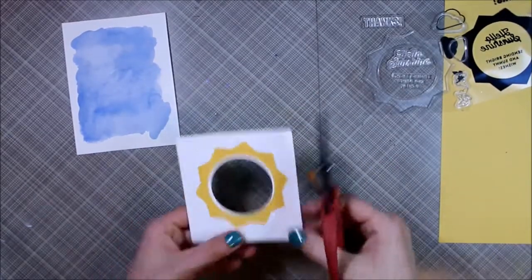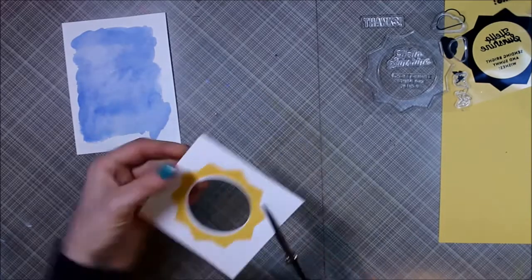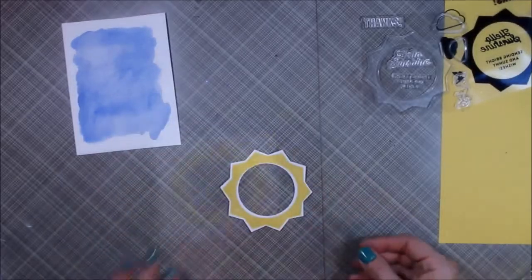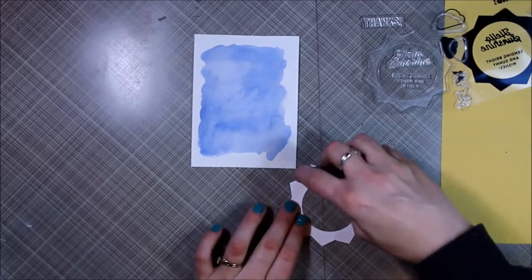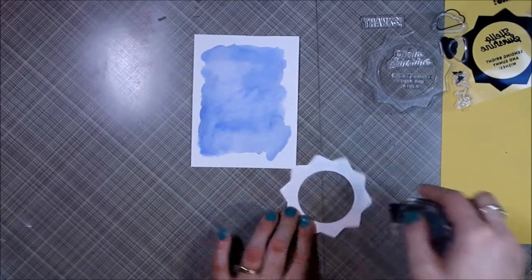There you can see that it did. Then I cut it out by hand and cut a coordinating piece of acetate. I adhered that to the sunshine with my snail adhesive.